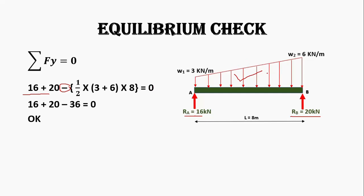For the trapezoidal load, we use the formula for the area of a trapezoid: 1/2 × sum of parallel sides × perpendicular side = 1/2 × (3 + 6) × 8 = 36 kN. The summation equals zero, confirming our support reactions are correct.